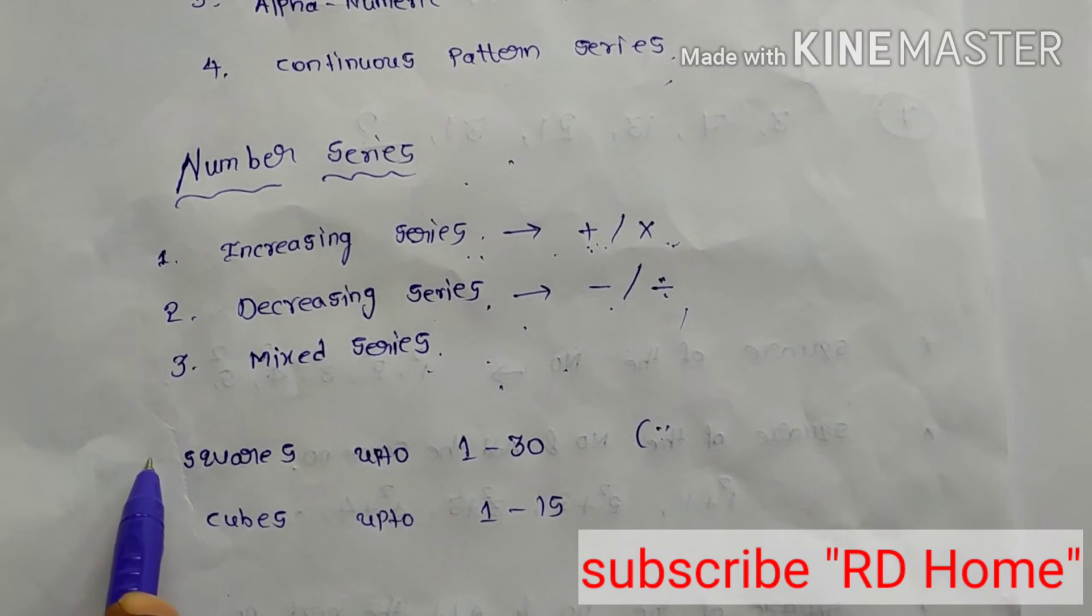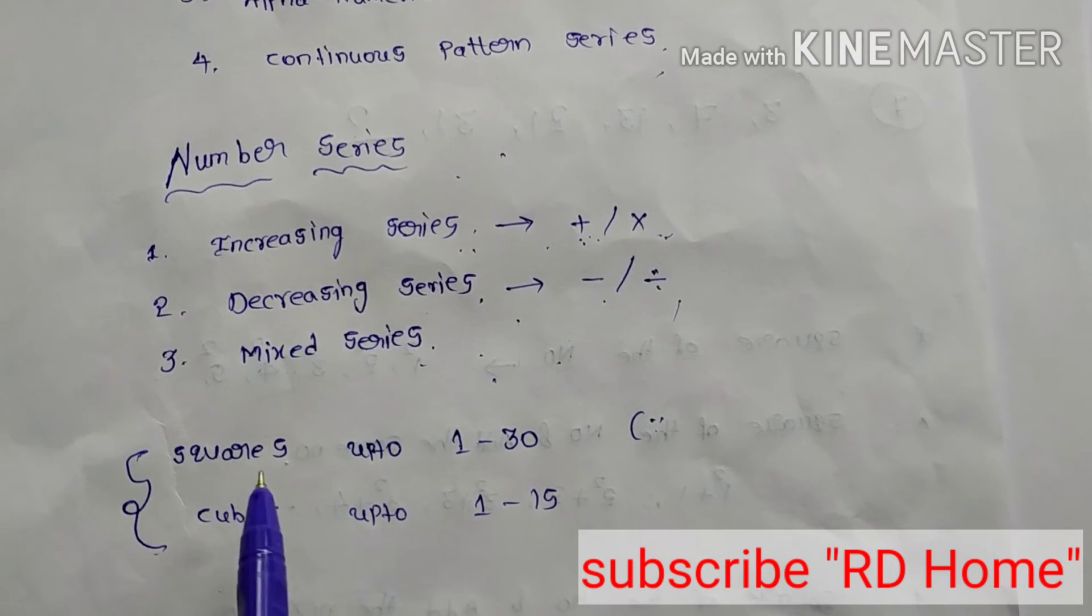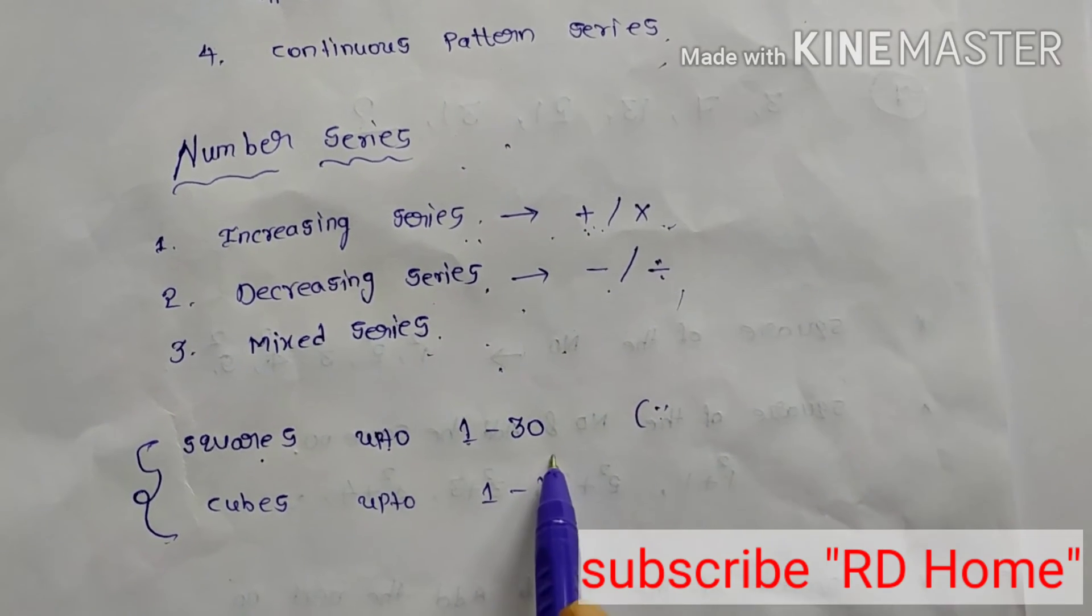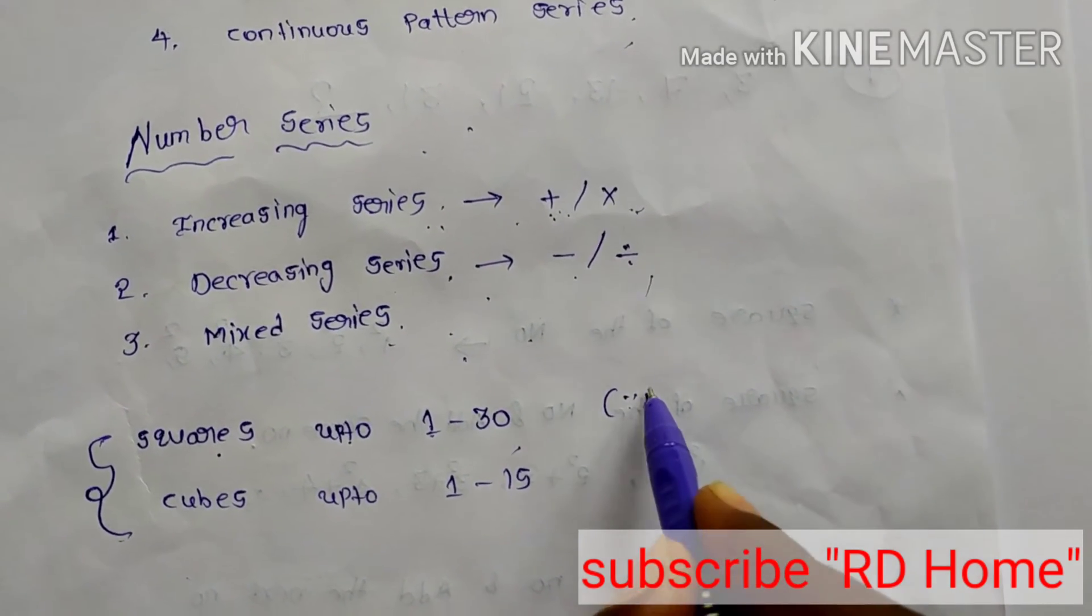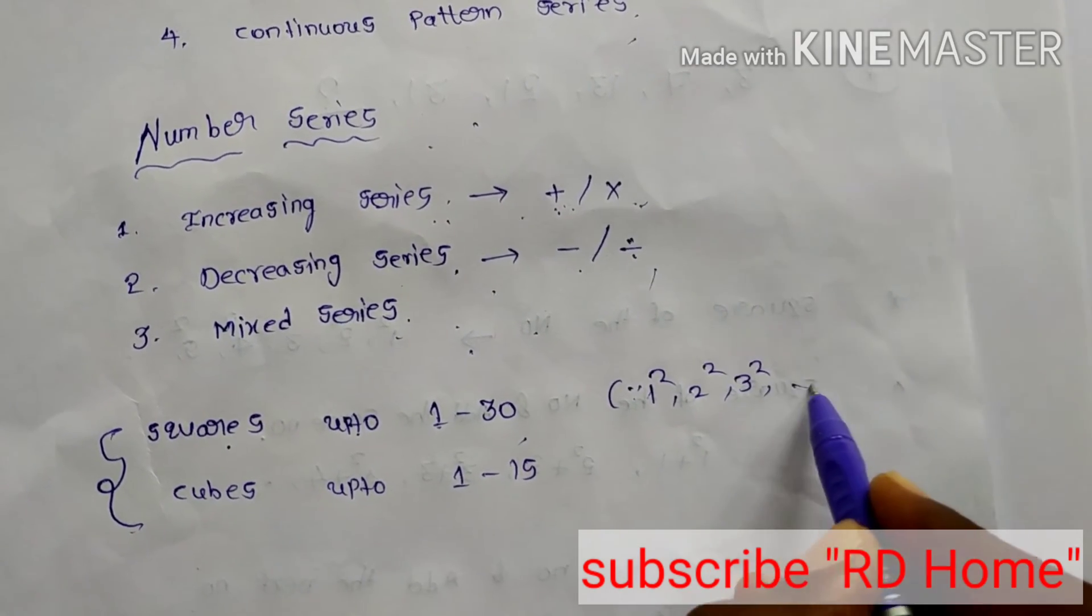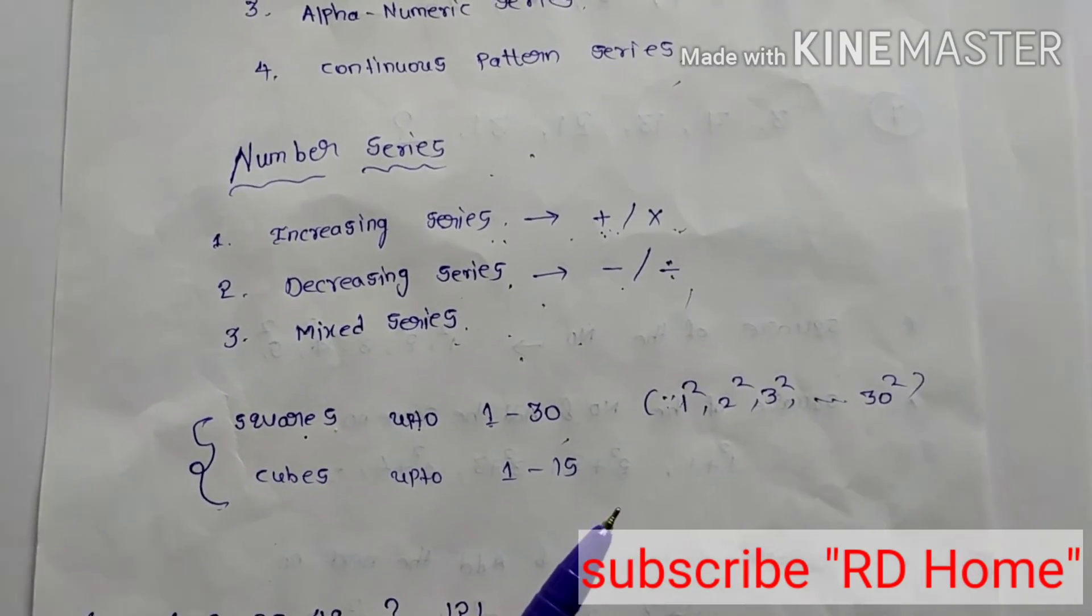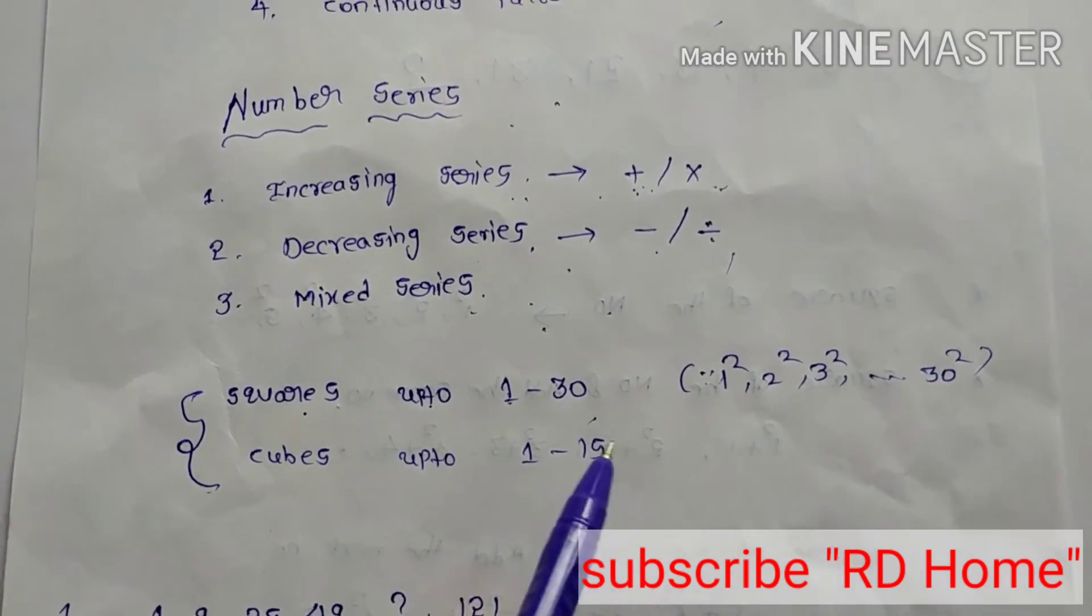See here. First of all, everyone should know the basic things. First one is, squares up to 1 to 30. Minimum, everyone should be remembered easily.